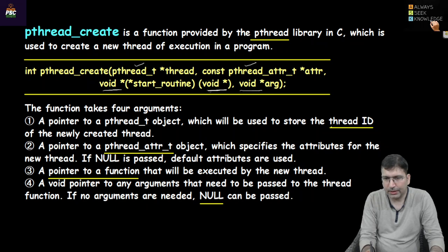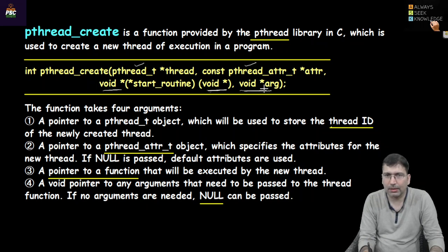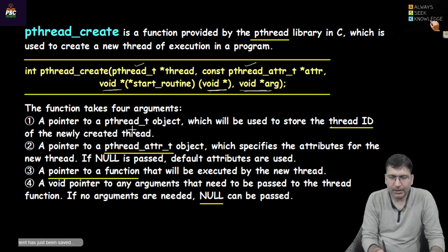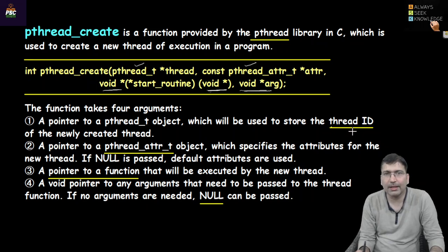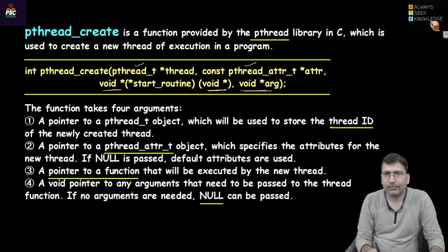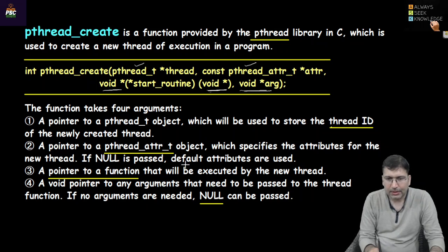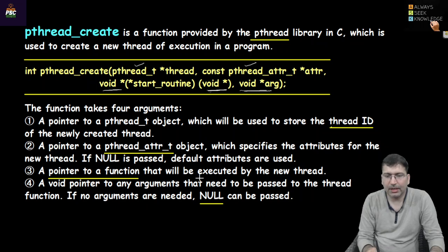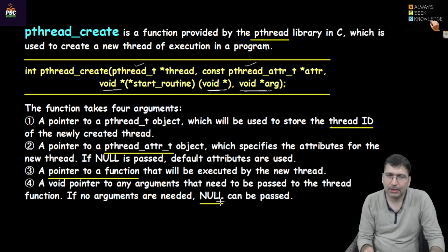The fourth argument is of void pointer type, because this is what we are actually passing to the thread function. If we don't want to pass anything, we can make it null. The first argument of type pthread_t stores the thread ID. The second argument of type pthread_attr_t sets attributes for the newly created thread — if null, default attributes are used. The third argument is a pointer to the function executed by the new thread, and the fourth is the argument to pass to that function.